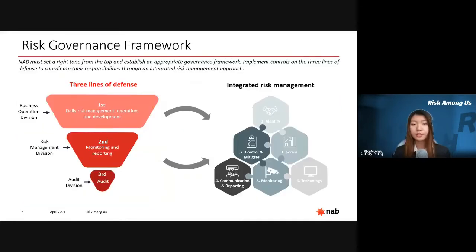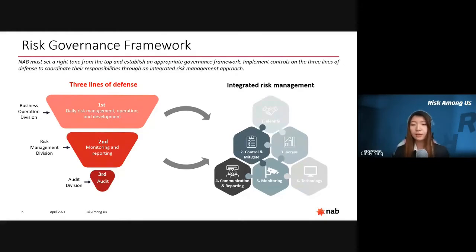To establish an effective risk governance framework, we start from the three lines of defense, a framework that divides risk management duties among three independent groups of employees, each with their own responsibilities. Each line of defense must follow an integrated risk management process: identifying problems, developing controls, assessing them, then communicating and reporting to senior level, monitoring continuously, and incorporating new technologies where applicable. This framework allows the bank to develop a risk-aware culture which improves decision-making.